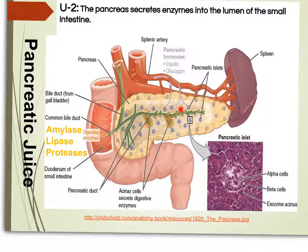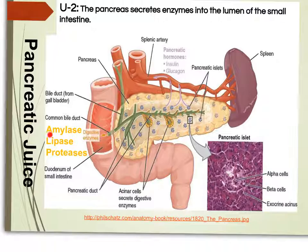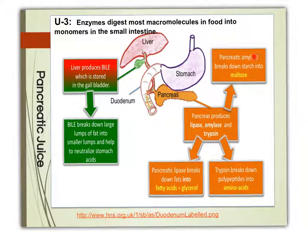The pancreas is a very important organ in the body. It has two types of functions: endocrine and exocrine. As an endocrine gland, it produces insulin and glucagon and puts them into the bloodstream to control the sugar level in the body. As an exocrine gland, its cells produce pancreatic juice and put it into the small intestine. This pancreatic juice contains enzymes: amylase, which converts starch into maltose; lipase, which converts fats into fatty acids and glycerol; and trypsin, which is a protease that converts polypeptides or proteins into amino acids.